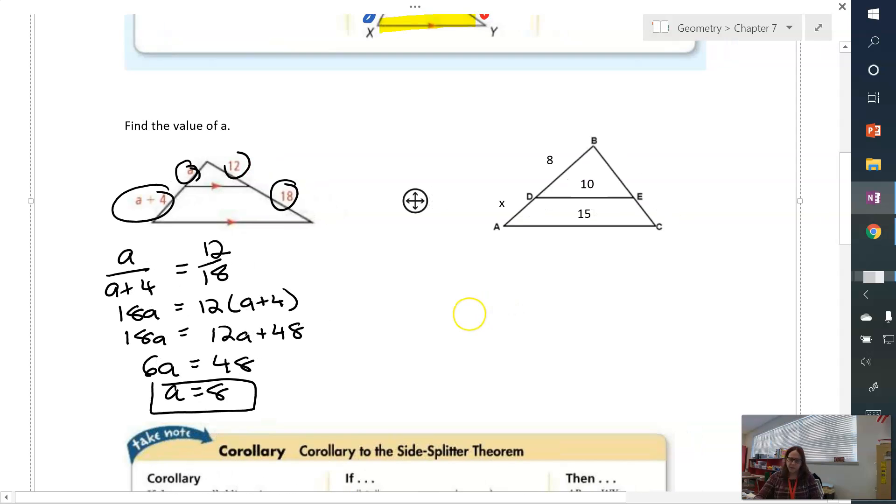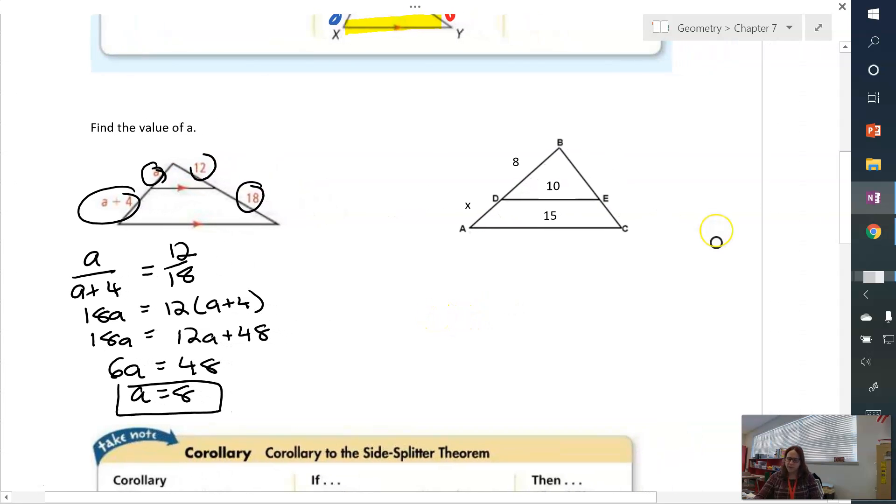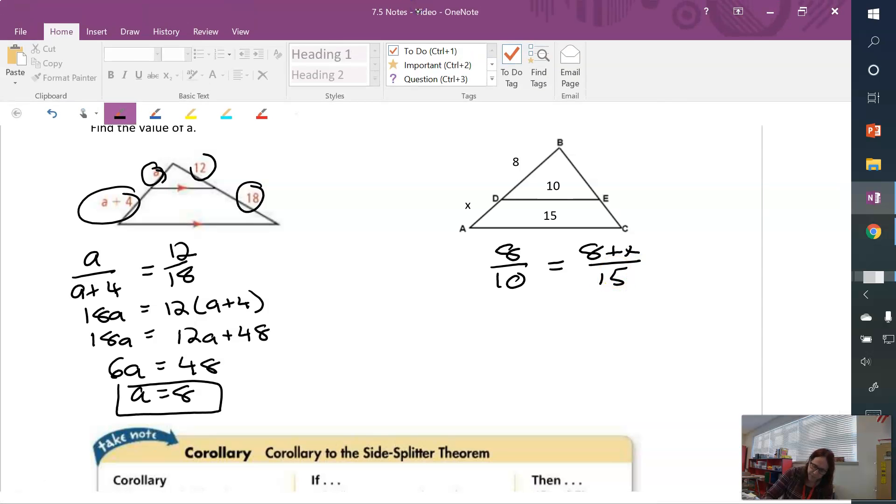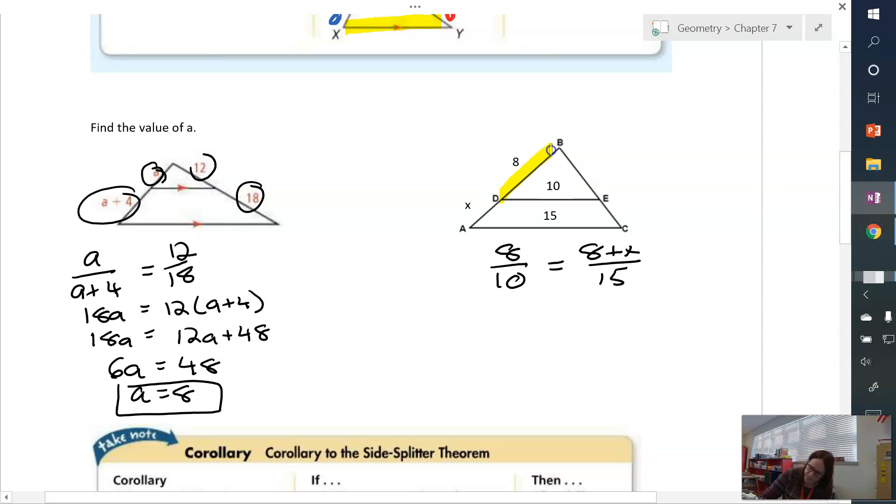Now take a look over here on our second triangle. This time, we know about the length of that segment and the length of the base. I can still do my side splitter. So here, I am going to do 8 over 10 is going to equal 8 plus x over 15. So what I'm doing here is this one over this one is going to be the same as the whole way across over the bottom, which is the whole way across.